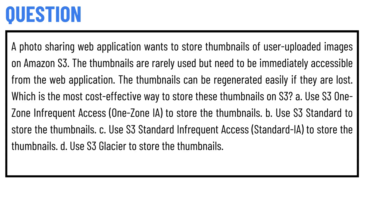A photo sharing web application wants to store thumbnails of user-uploaded images on Amazon S3. The thumbnails are rarely used but need to be immediately accessible from the web application. The thumbnails can be regenerated easily if they are lost. Which is the most cost-effective way to store these thumbnails on S3? Option A: Use S3 One Zone-Infrequent Access (One Zone-IA) to store the thumbnails. Option B: Use S3 Standard to store the thumbnails.